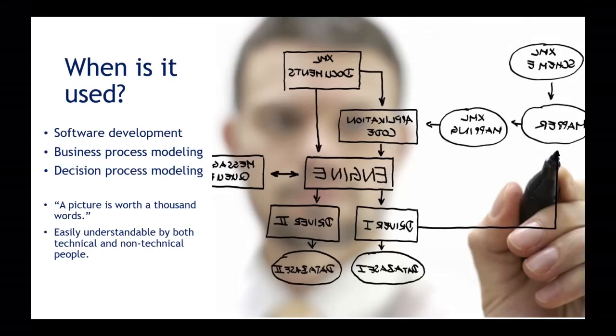When do we use it? We use it a lot in software development, business process modeling, decision process modeling. The picture is worth a thousand words. It's just so much easier to understand by both technical and non-technical people. So for any kind of coding assignment, it's always very helpful to draw a flowchart. Even if it's not on a piece of paper, you should always have a flowchart in your head so you know exactly what you're coding. It's like having a blueprint before building a house.